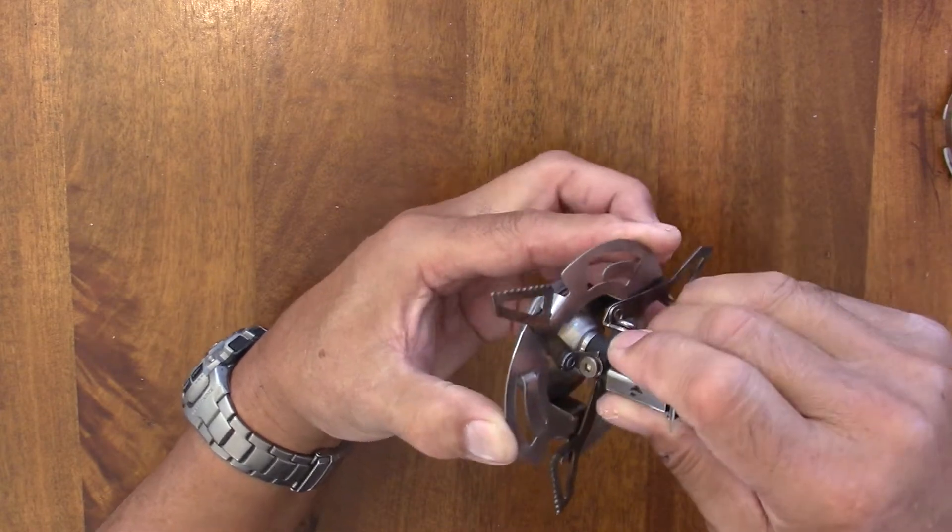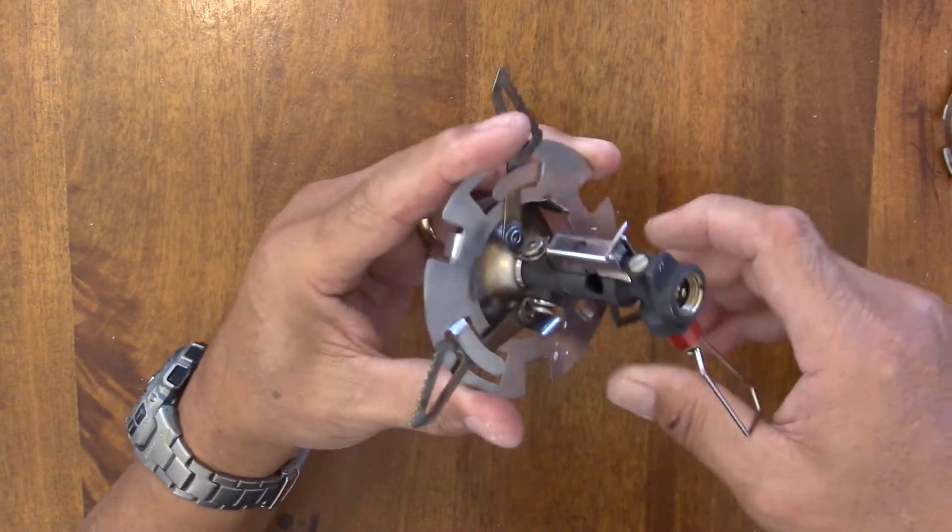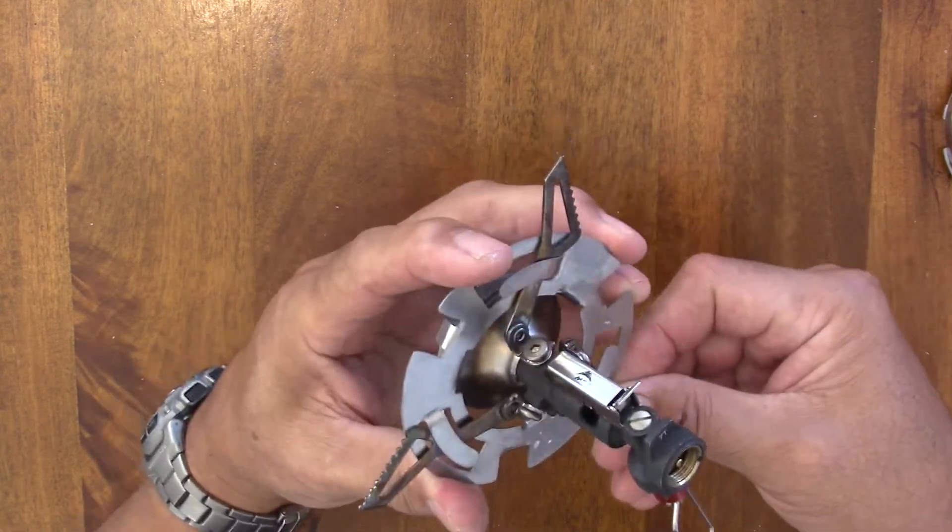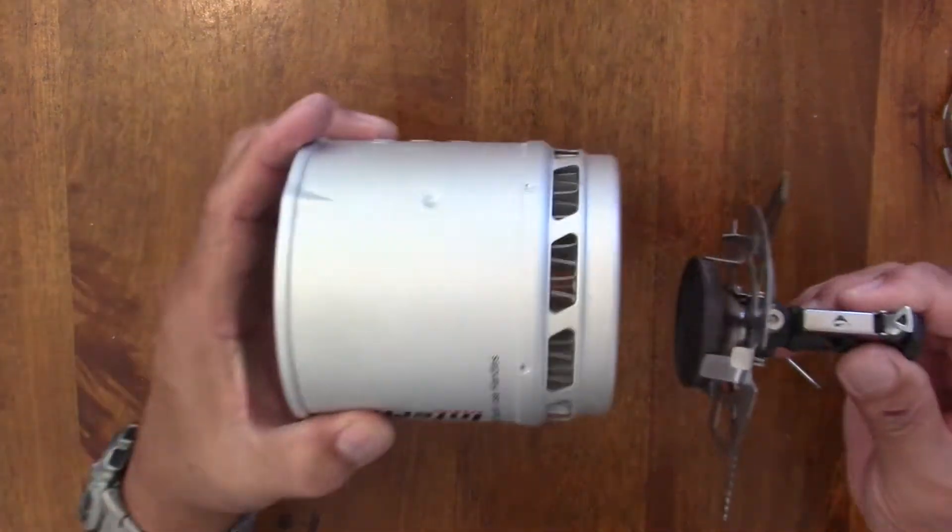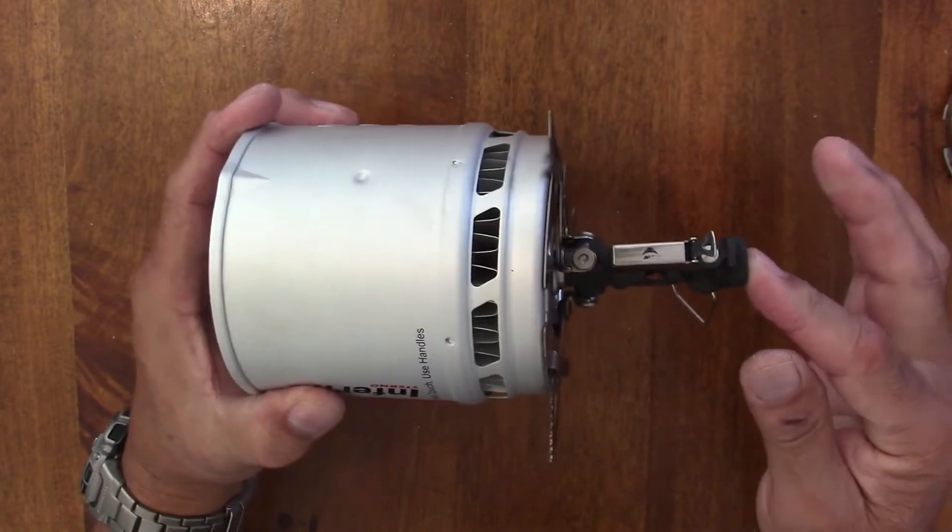rotate it over, and that holds the stove in place. And now it perfectly aligns the burner head to the heat exchanger bottom.